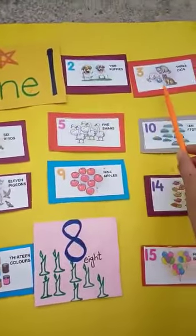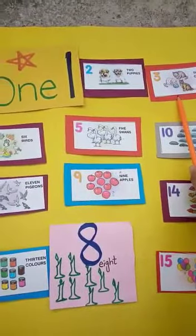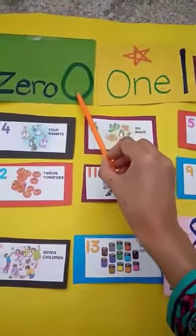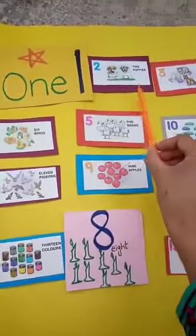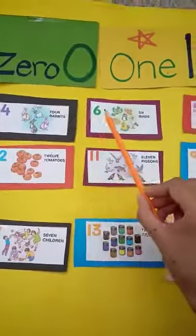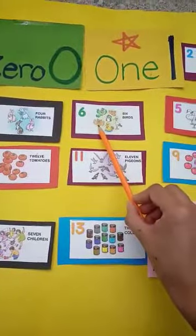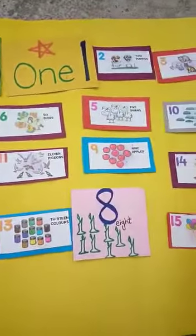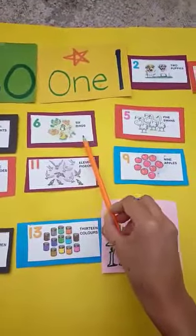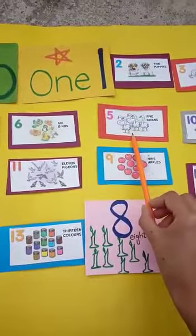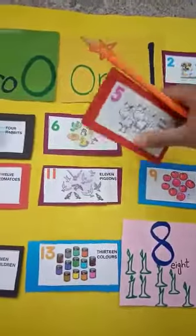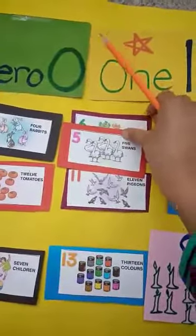Good — number five. ہمارے پاس یہ ہے جو number four کے بعد آتا ہے۔ (We have this one which comes after number four.)